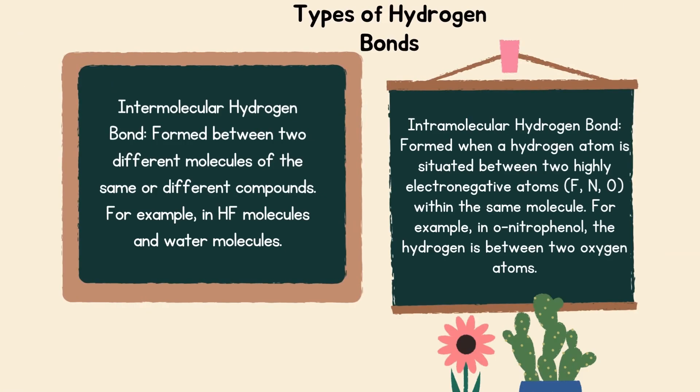Types of hydrogen bonds. Number one: Intermolecular hydrogen bond formed between two different molecules of the same or different compounds. For example, in HF molecules and water molecules. Intramolecular hydrogen bond formed when a hydrogen atom is situated between two highly electronegative atoms F, N, O within the same molecule. For example, in O-nitrophenol, the hydrogen is between two oxygen atoms.